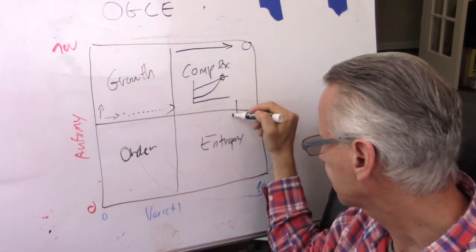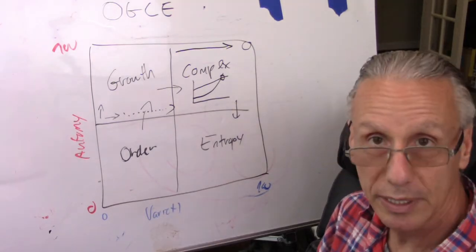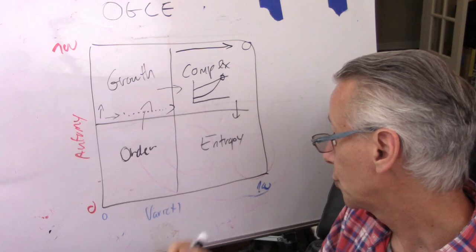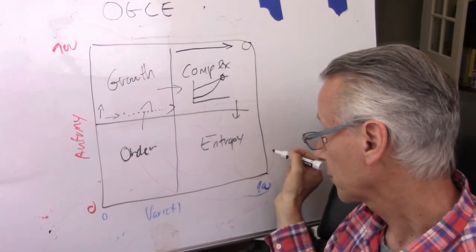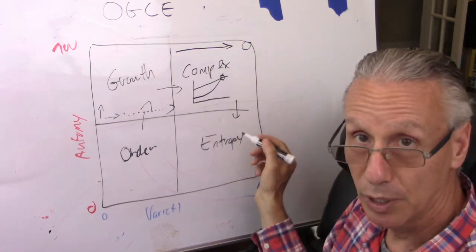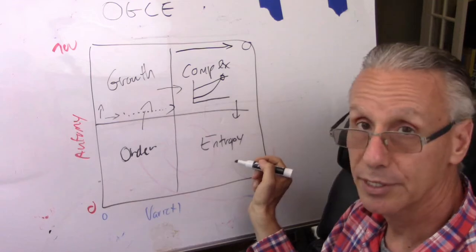So, what happened in entropy is that the variety is starting to decrease. Sorry, autonomy started to decrease first. When autonomy starts to decrease, as a result, variety starts to decrease. I'm going down in autonomy, and as a result, I'm going down in variety.